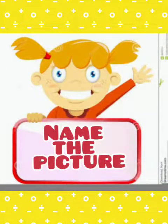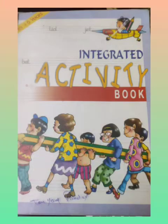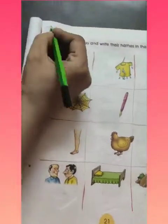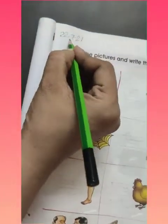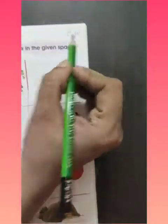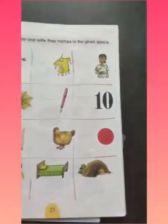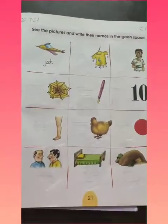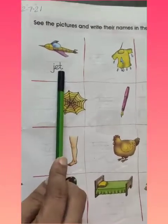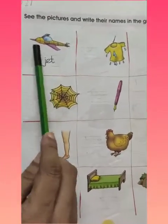Hello kids, check out your integrated activity book and open page 21. Now write the date here and classwork. What you have to do is look at the picture and write its name.